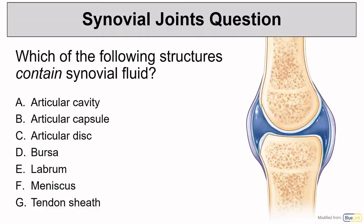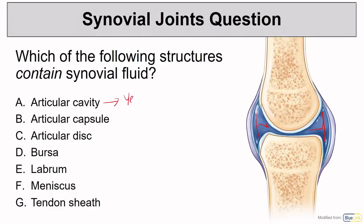For our review question: which of the following structures contain synovial fluid? This is a choose-all-that-apply question. Does the articular cavity contain synovial fluid? Yes — the articular cavity contains synovial fluid. What about within the articular capsule? The capsule wall itself doesn't have fluid, but it surrounds the cavity which does — so that's a no, though it's understandable if you said yes.